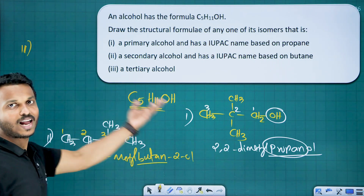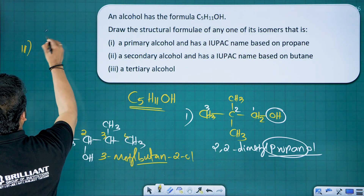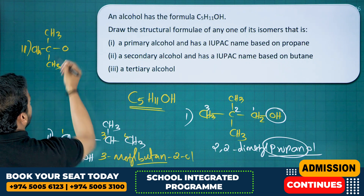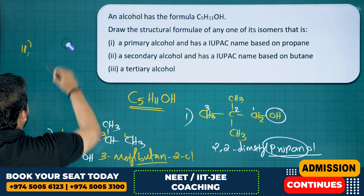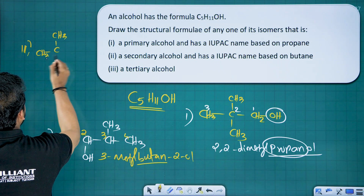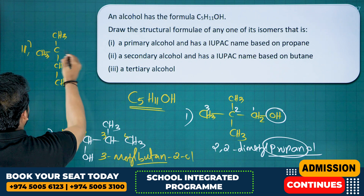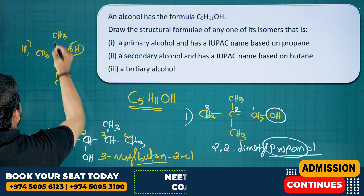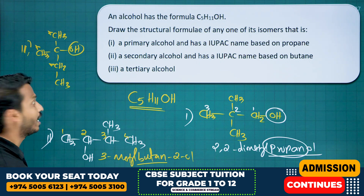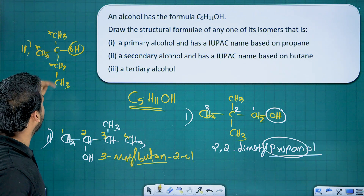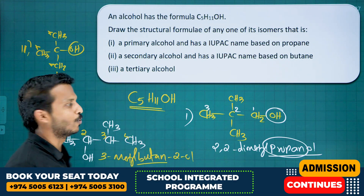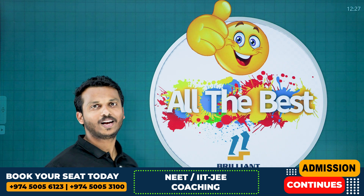Third part: a tertiary alcohol with five carbons. With five carbons and a tertiary OH: (CH3)3CCH2OH — no, let's have the OH on a carbon bonded to three carbons: CH3C(OH)(CH3)CH2CH3. The OH-connected carbon is bonded to three carbons, so it is tertiary. IUPAC name: 2-methylbutan-2-ol. So this is the tertiary alcohol possible with this formula.